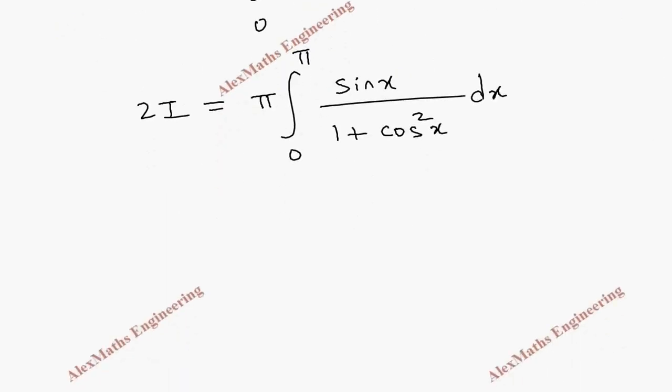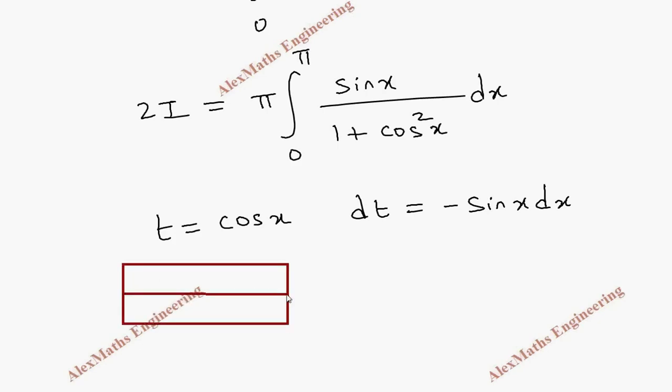And after this, we have to do the normal integration by substitution. Let's take t equals cos x and dt will be minus sin x dx. Whenever we give substitution, we change the limit. So we write the original limit x and the corresponding new limit t. Here, x is from 0 to π. And t, when I put 0, cos is 1. When I put π, cos is minus 1.